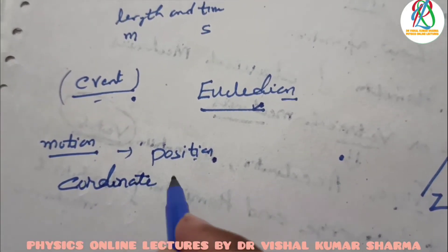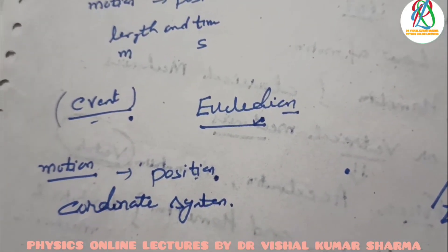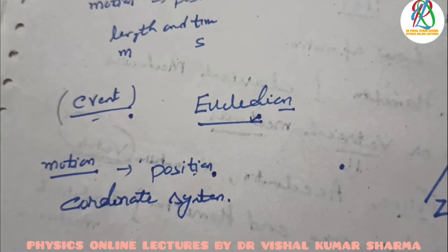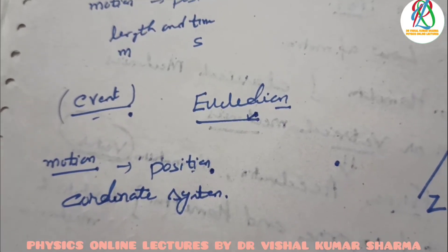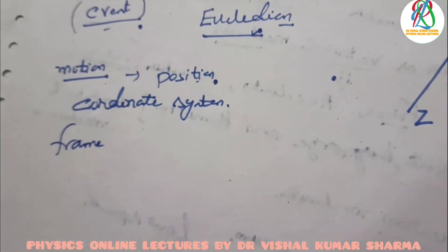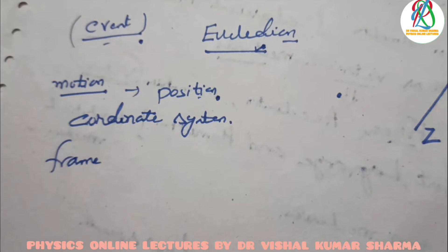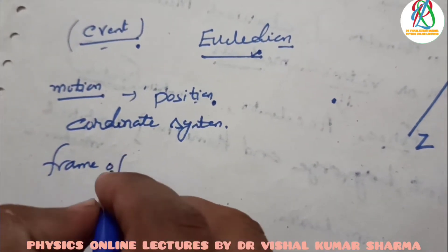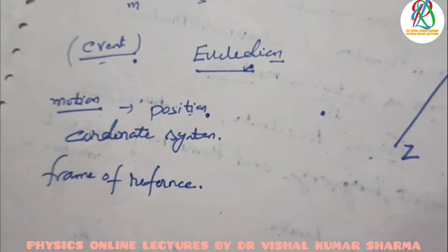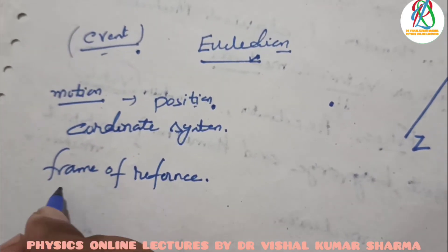To define the position of a particle, we need a proper coordinate system and a reference. If we imagine a coordinate system attached to a certain rigid body and describe the position of any particle relative to it, then such a coordinate system is called the frame of reference. It gives us proper information about the position of any particle relative to that coordinate system.